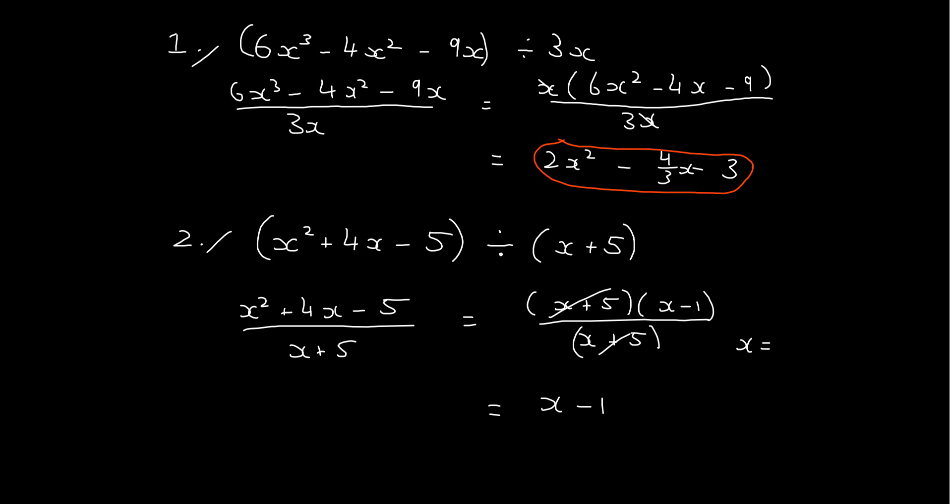And of course x can't equal negative 5. So that's the basic idea of dividing a polynomial. But notice that when we've divided these two polynomials by another polynomial, we're left with another polynomial. That's not always the case — just like when you divide an integer by another integer you're not always left with an integer. 6 divided by 2 is 3, but 7 divided by 2 is 3 and a half. And you also don't always get a polynomial when you divide two polynomials.